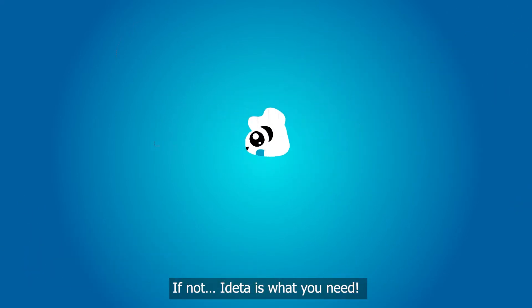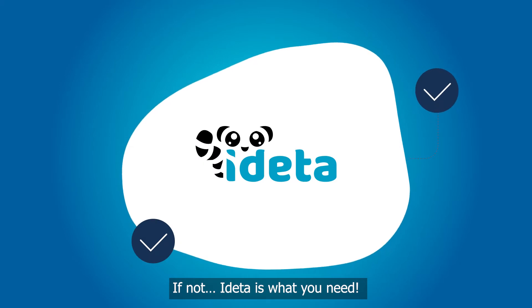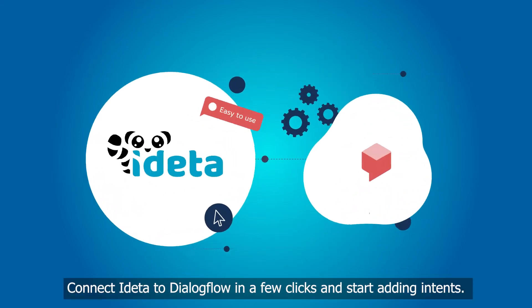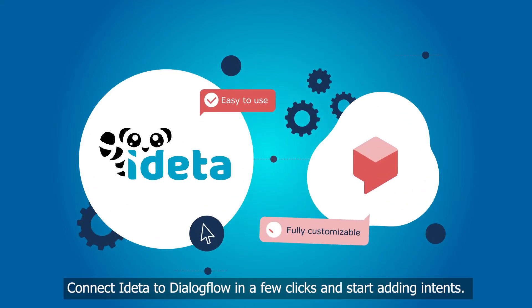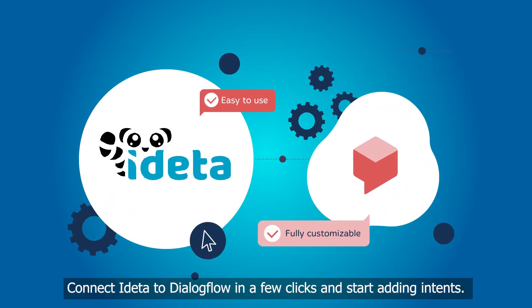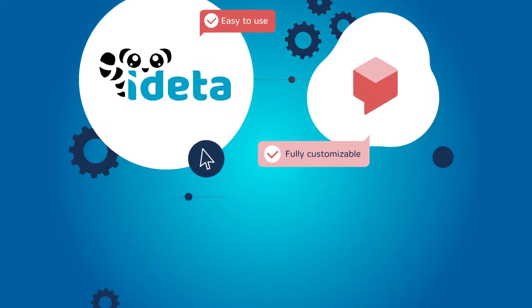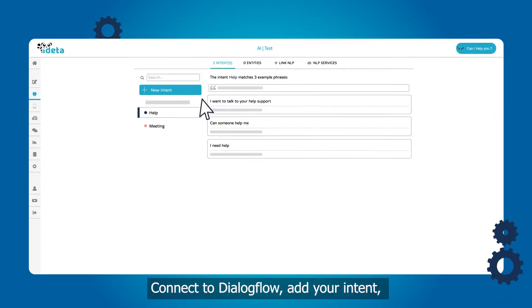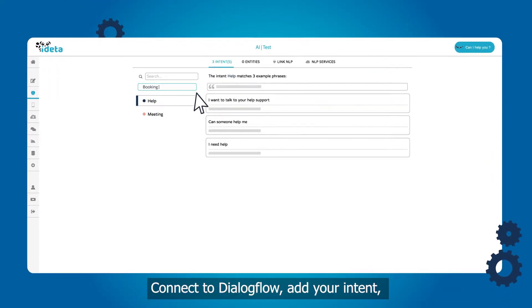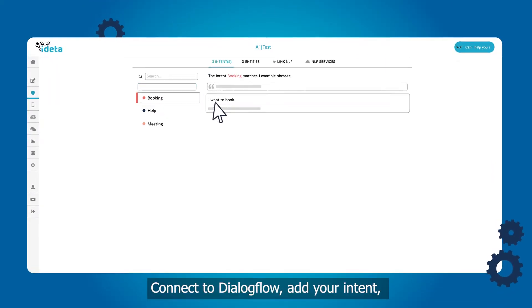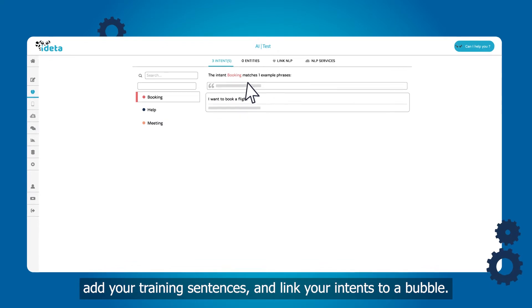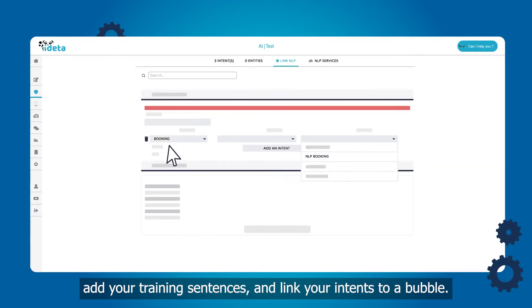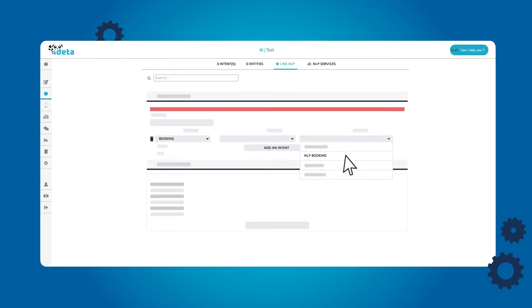If not, IDETA is what you need. Connect IDETA to Dialogflow in a few clicks and start adding intents. Connect to Dialogflow, add your intent, add your training sentences, and link your intents to a bubble.